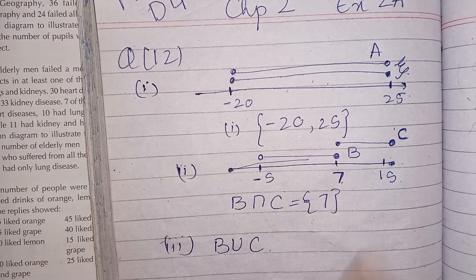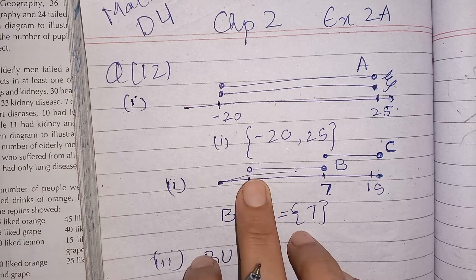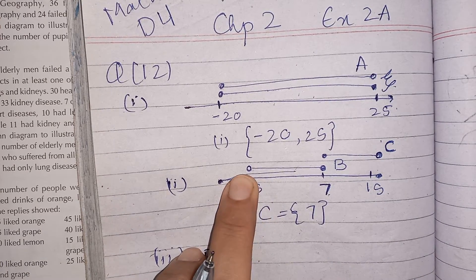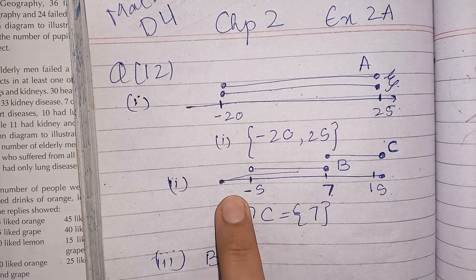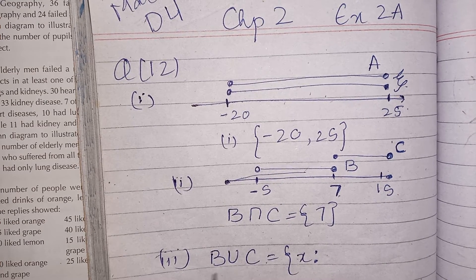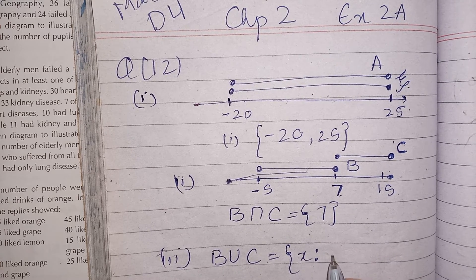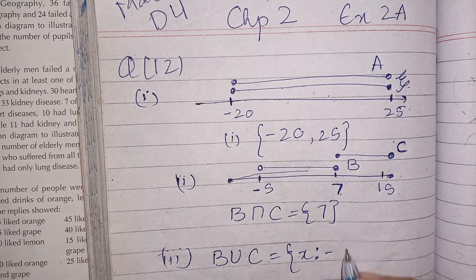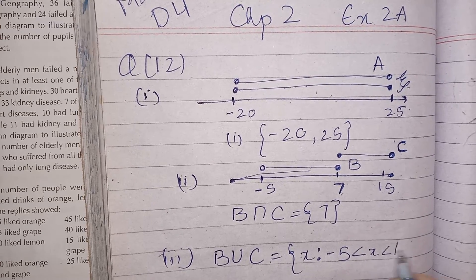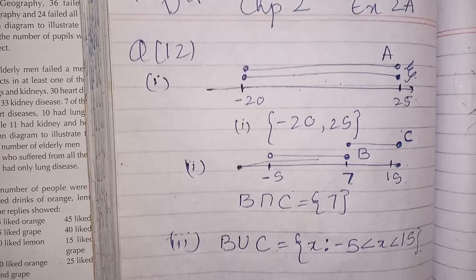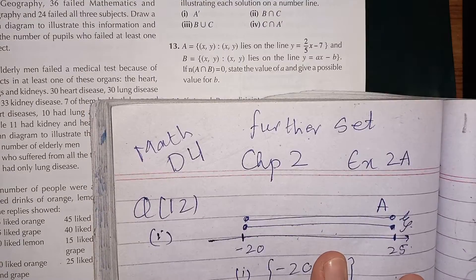For part 3, B union C: looking at the number line, B union C spans from minus 5 to 15, but not including those two endpoints. So B union C = {x : -5 < x < 15}.